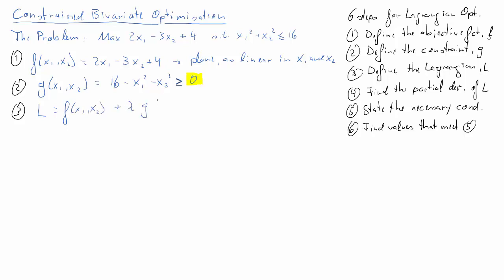The Lagrangian is f plus lambda times g — the objective function plus lambda times the constraint. Filling in our information, that's equal to 2x₁ minus 3x₂ plus 4 plus lambda times (16 minus x₁ squared minus x₂ squared).